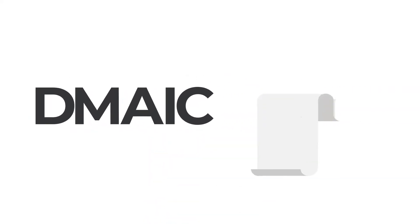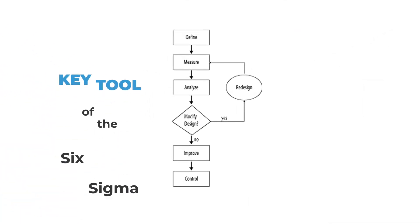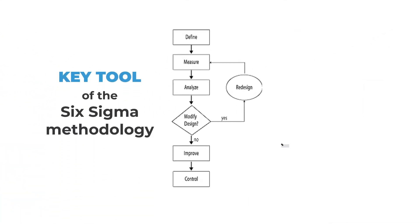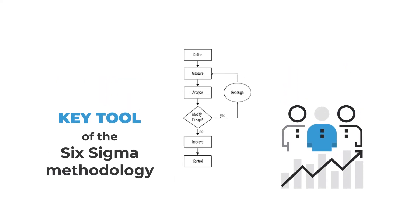DMAIC is a data-driven technique used to improve processes. It's a key tool of the Six Sigma methodology, but it can be implemented as a standalone improvement method or as part of other process initiatives like LEAN.